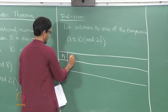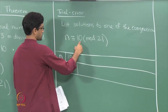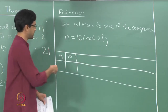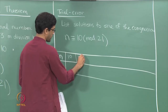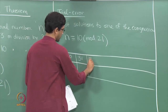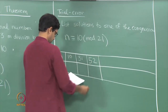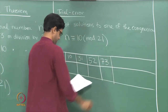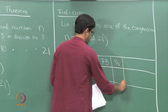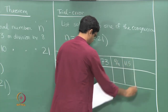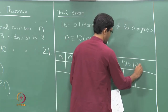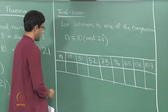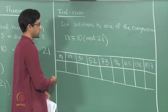Since we are only looking for natural numbers, n equals 10 is one possibility. Since it needs to be congruent to 10 modulo 21, all you need to do to get the rest of the solutions is to keep adding multiples of 21. So I have 10, I add 21 to get 31, then 52, then 73, then 94, 115, 136, 157, and so on.